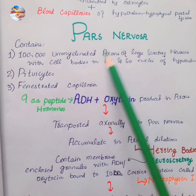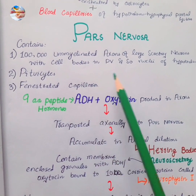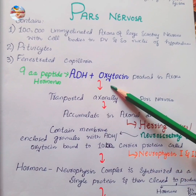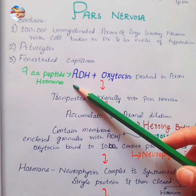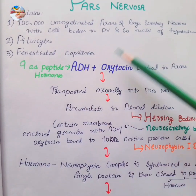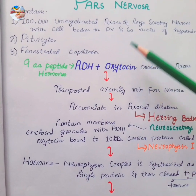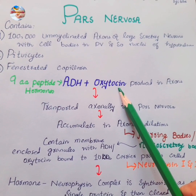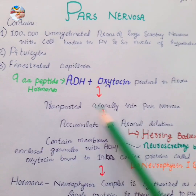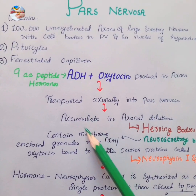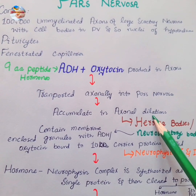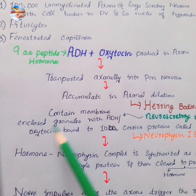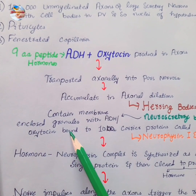The posterior pituitary secretes only two hormones: ADH and oxytocin. ADH is also called vasopressin, and its basic function is to reabsorb water from the renal tubules. ADH and oxytocin are produced in the supraoptic and paraventricular nuclei of the hypothalamus and then transported axonally into the pars nervosa, where they accumulate in the axonal dilations called herring bodies or neurosecretory bodies.